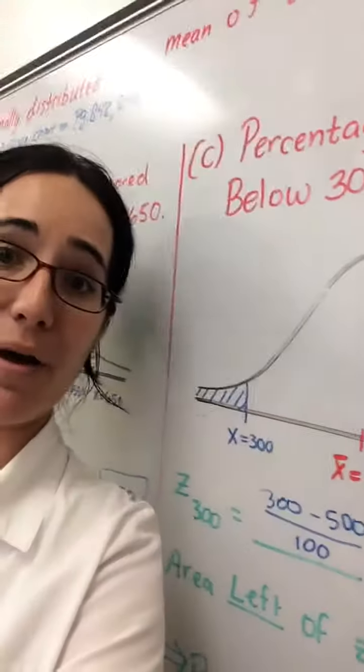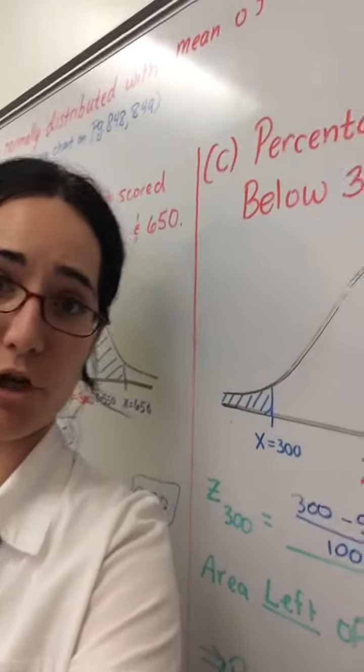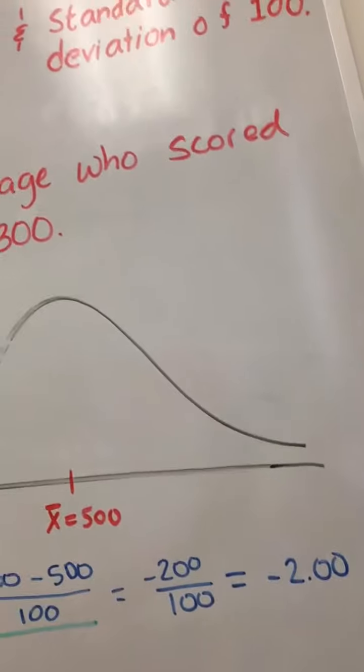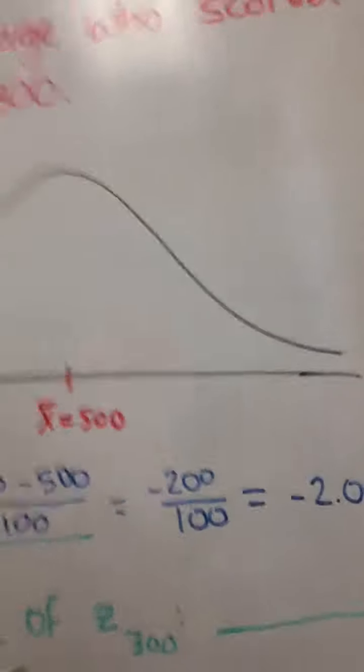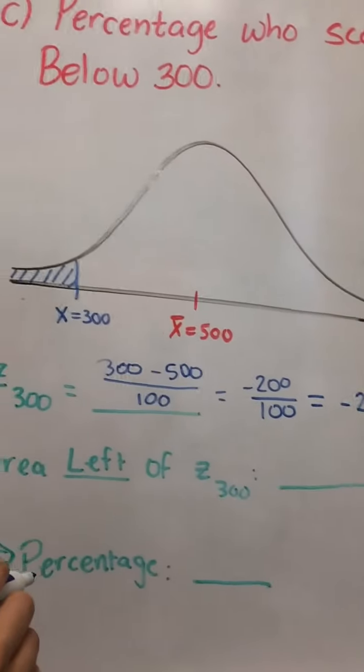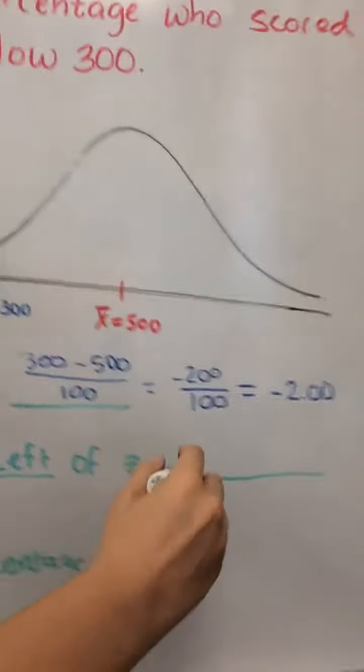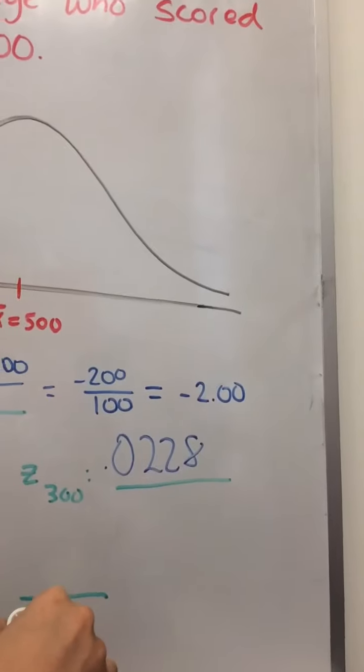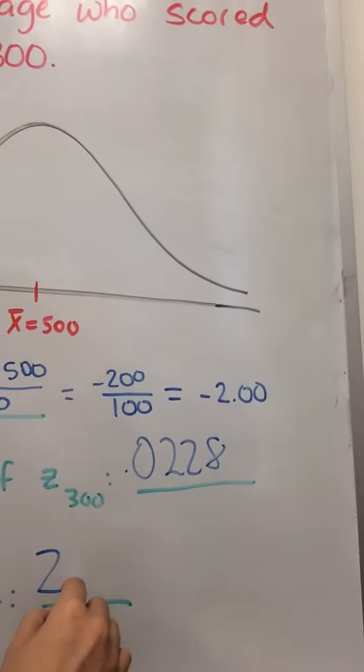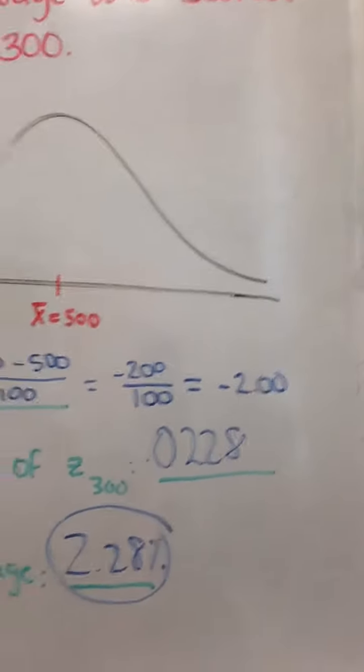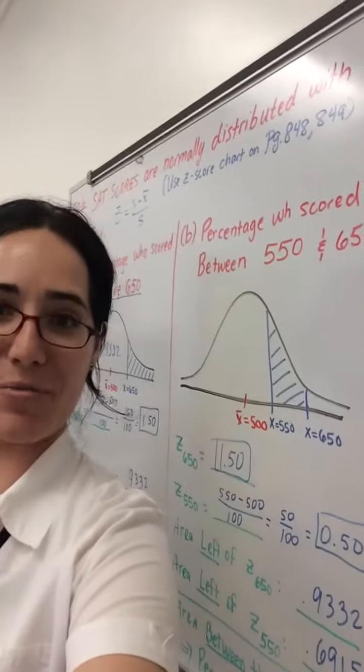Now we need to look that value up on the negative z-score chart. When I do look that value up, I get .0228 as my area to the left of that z-score, which means as a percentage, 2.28% of people score below a 300.